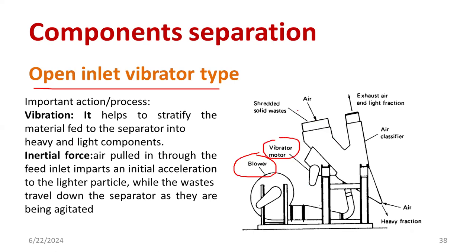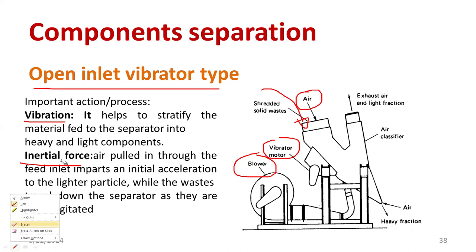You insert the waste and airflow is provided continuously. In parallel you operate the motor to create vibration. Because of this, the heavy items are separated out at the bottom side, while the light items go to the upper side and come outside along with the air. This is basically the principle of vibration as well as inertial force — you are making use of the inertial force here.